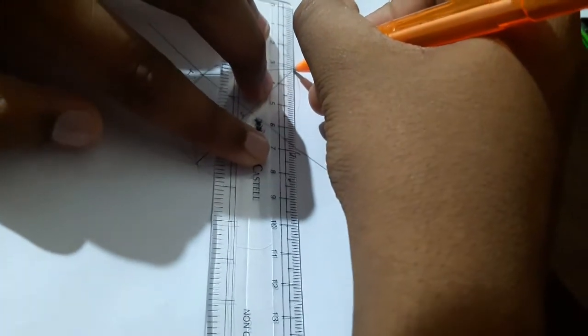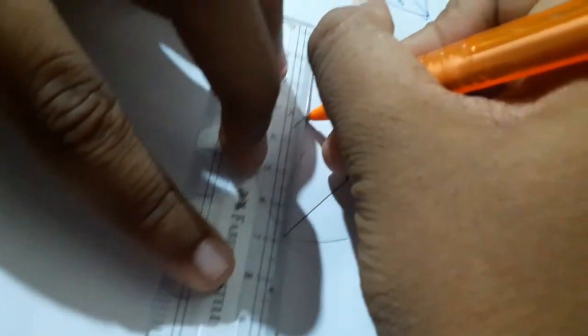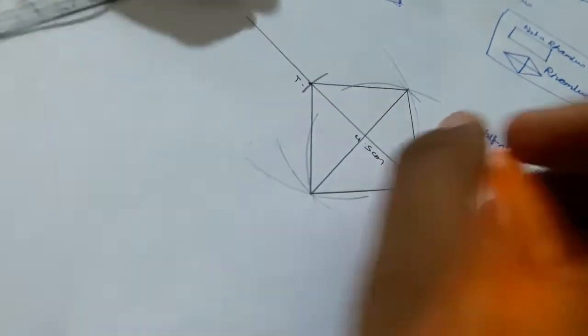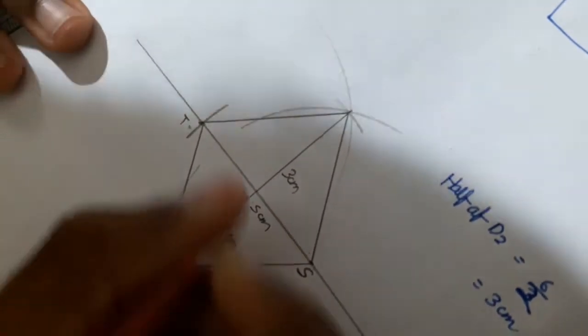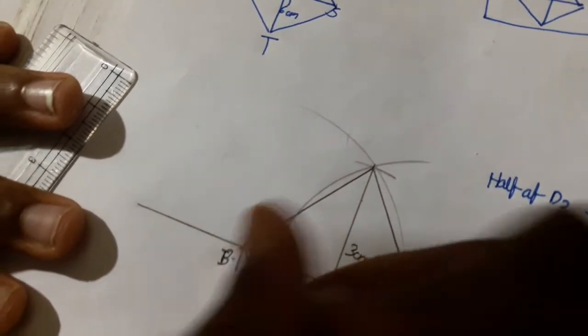Now join the line to this point and join it to S, then to T. Now take this point and join it on this, and take this and join it on this. B, E, S, T.